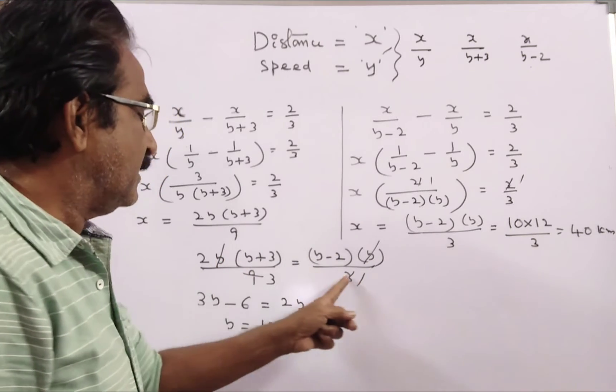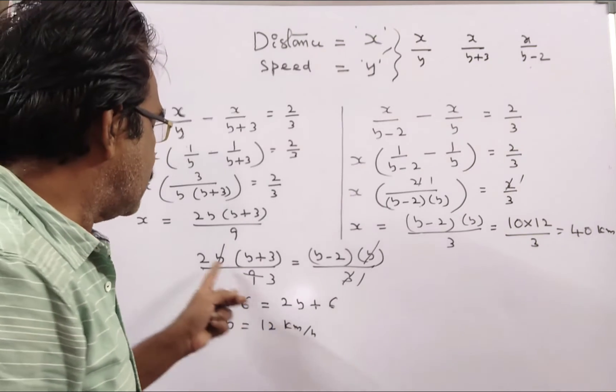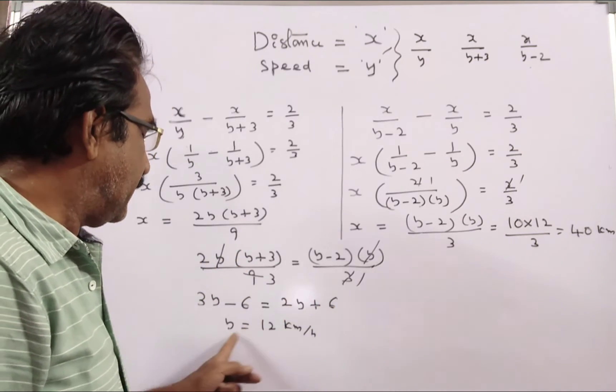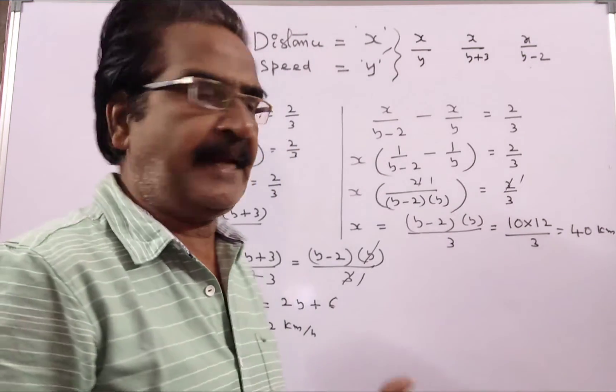y gets cancelled, 3 ones, 3 threes. 3y minus 6, 3y minus 6 is equal to 2y plus 6. It implies y is equal to 12 kmh. Friends, y is equal to 12 kmh.